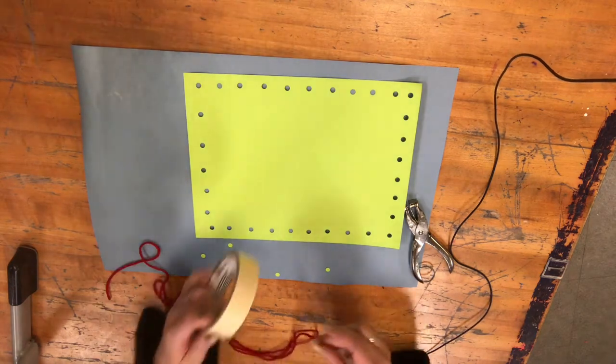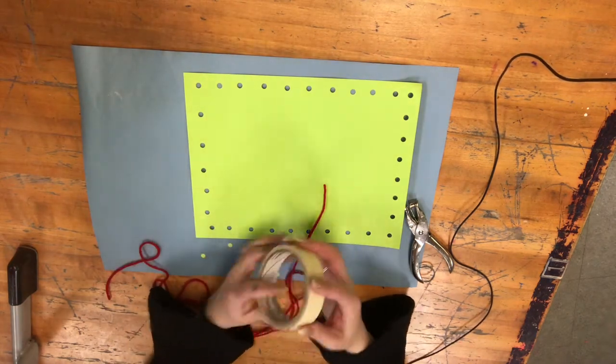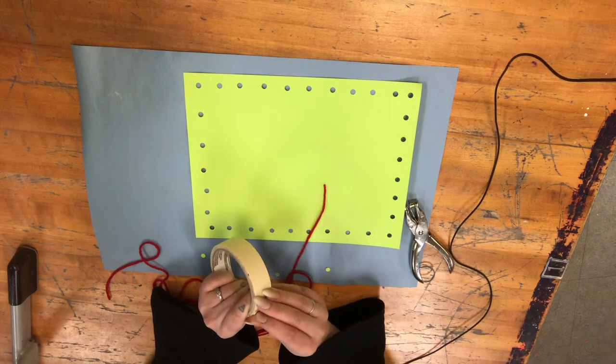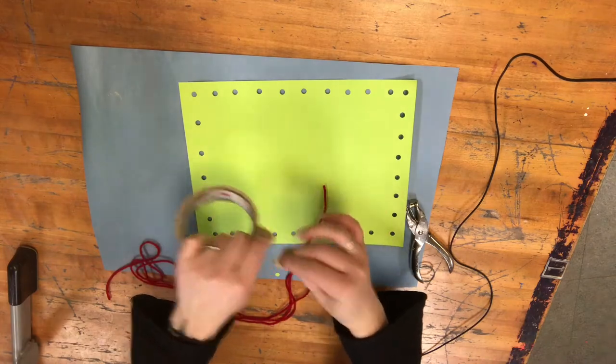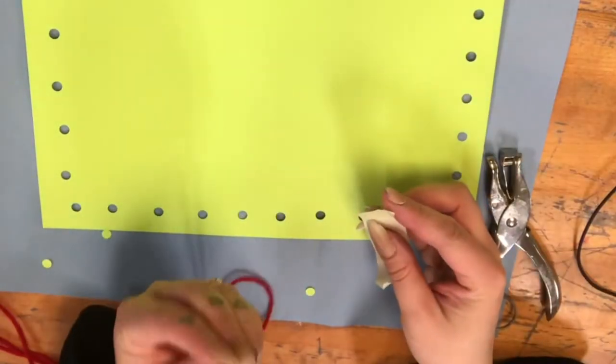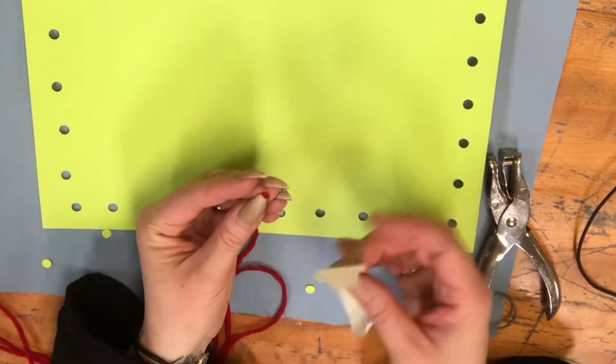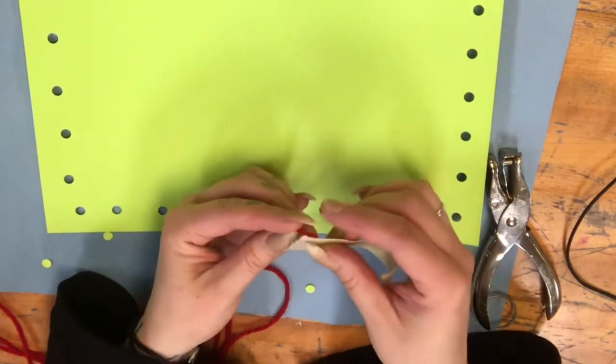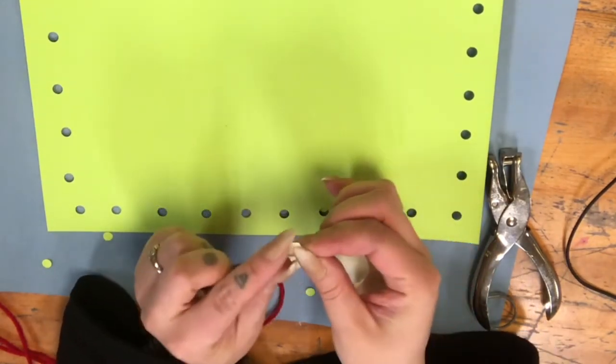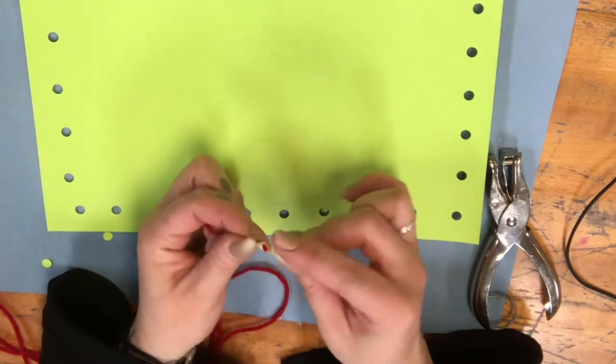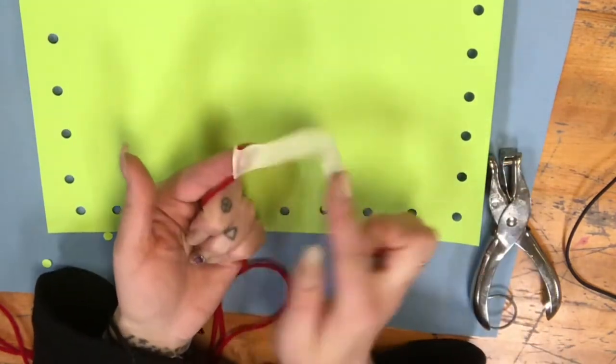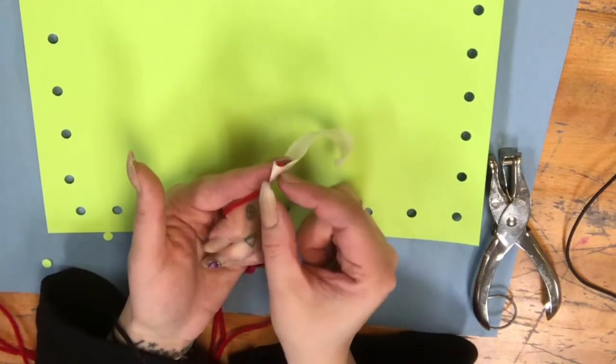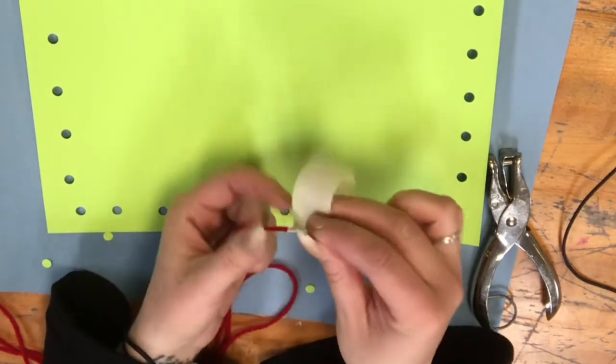Next you're going to take some tape. Any kind of tape is okay, we'll be using yellow tape. Get a little bit of tape off. And then we're going to wrap it around one of the edges of your yarn. The goal is to try and make your yarn pointy and stiff. So you don't want to wrap it around really big to make this wide. Our goal is to make this as skinny as possible to make the sewing part easier.